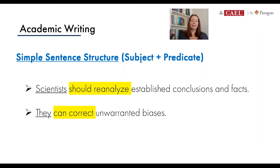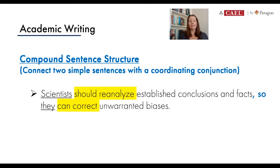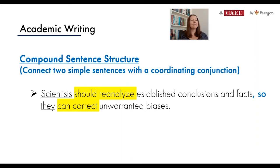When we looked at compound sentence structure, we took both simple sentences and connected them together using a joining word. The joining word in this example is 'so,' and we call those joining words conjunctions. The whole sentence is now a compound one: 'Scientists should reanalyze established conclusions and facts, so they can correct unwarranted biases.'